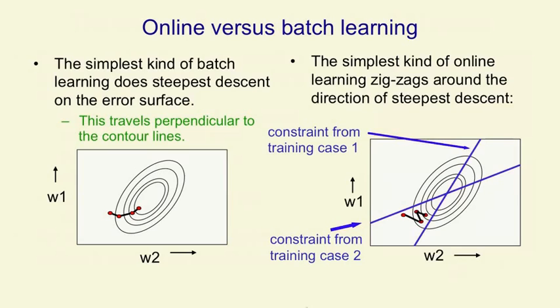To put it another way, if we look at the error surface from above, we get elliptical contour lines, and the delta rule is going to take us at right angles to those elliptical contour lines, as shown in the picture. That's what happens with what's called batch learning, where we get the gradient summed over all training cases.